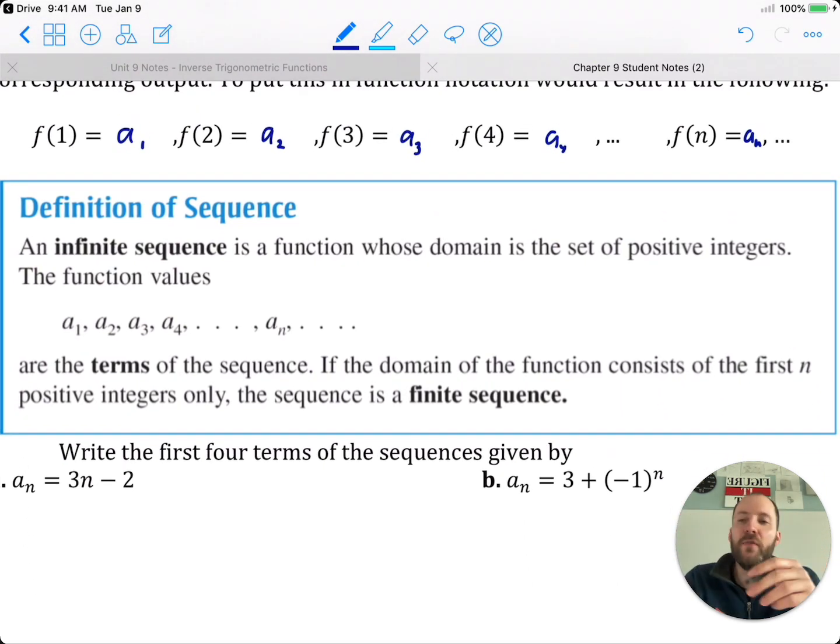A sequence, an infinite sequence, is a function whose domain is the set of positive integers. Those positive integers give you A sub 1, A sub 2, A sub 3, A sub 4, A sub n, and so on. Those are all terms of the sequence. So the inputs are integers, they give you your terms. You won't see A sub 1 half, A sub 7 thirds. You'll only see sub a positive integer.